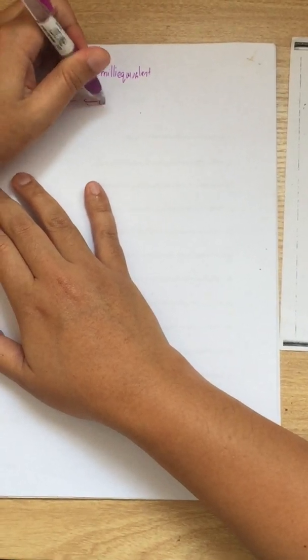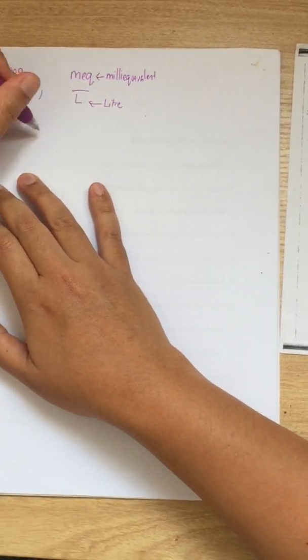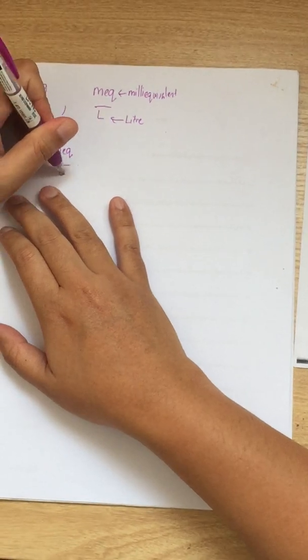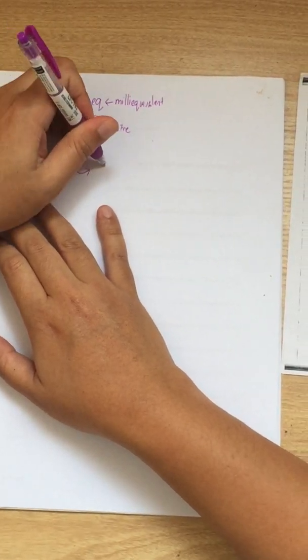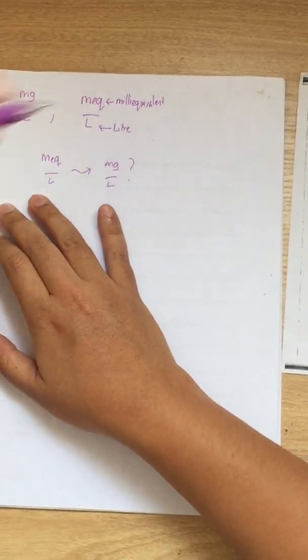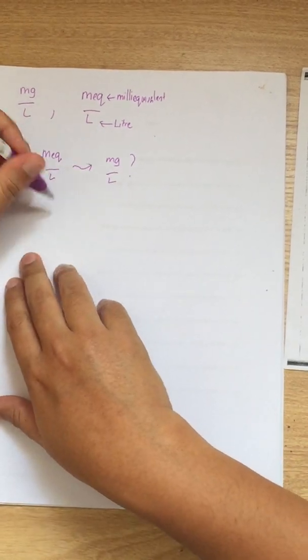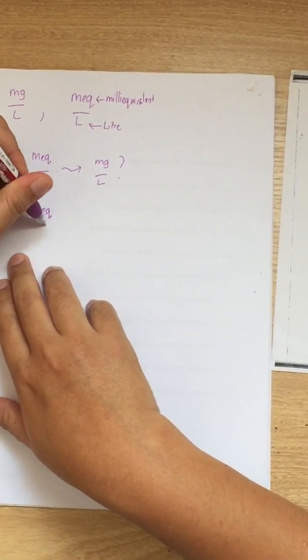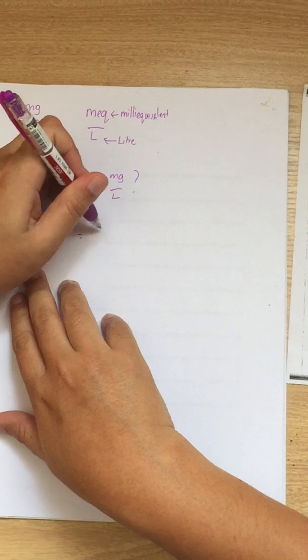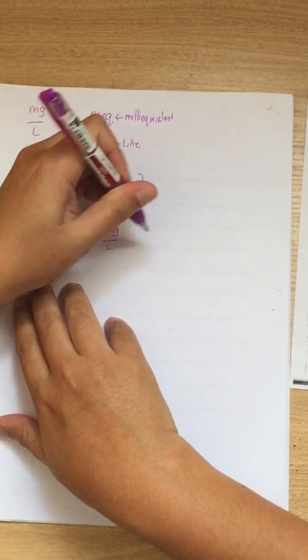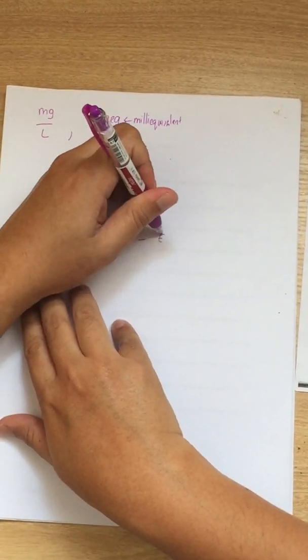This one is liter. So how is milliequivalent per liter related to milligram per liter? The answer is milliequivalent per liter is equal to milligram per liter divided by equivalent mass.